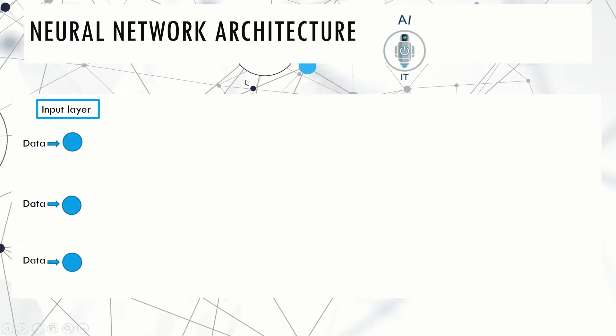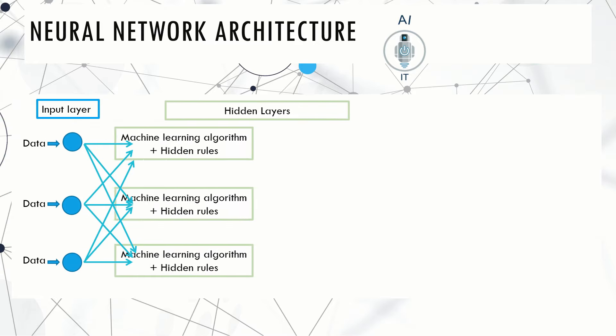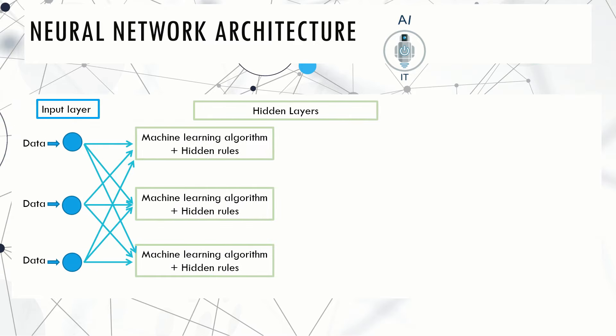This is another representation of neural network. In the input layer, there are three nodes which take the data from the user as input and pass this on to the first hidden layer of the multiple hidden layers. Each node in this hidden layer has its own machine learning algorithm and hidden rules.